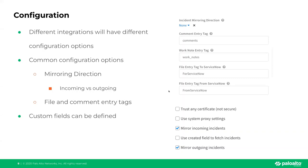The first piece we're going to look at is configuration of the integration. Different integrations will have different configuration options, but there are a few that are consistent across all of them. The first is mirroring direction — whether you want incoming, outgoing, or both. Incoming would be from the tool into XSOAR, for example from Jira into XSOAR. Outgoing is from XSOAR into the tool, and both is the bidirectional mirroring.